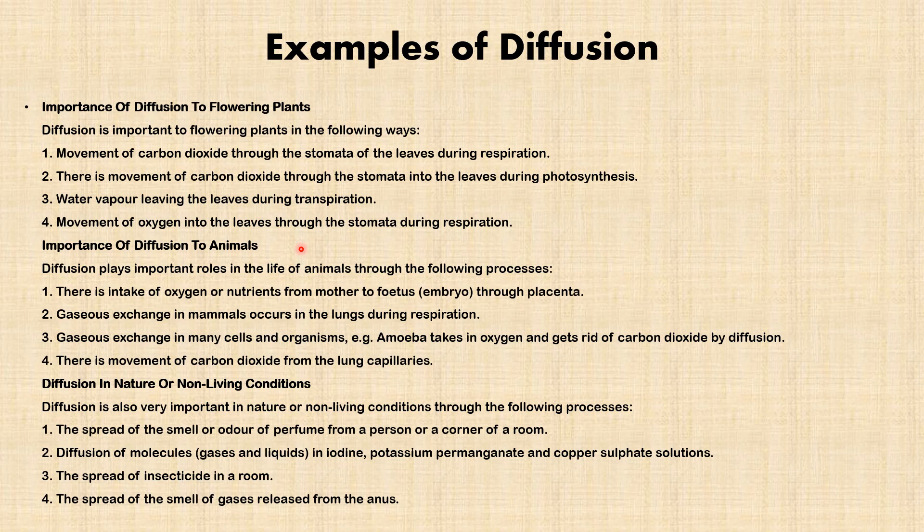Diffusion also plays an important role in the life of animals through the following processes: intake of oxygen and nutrients from mother to fetus through the placenta; gaseous exchange in mammals in the lungs during respiration, where gases are exchanged between the alveoli and the capillaries carrying blood to the lungs; gaseous exchange in single-celled organisms — for example, amoeba takes in oxygen and gets rid of carbon dioxide by simple diffusion; and movement of carbon dioxide from lung capillaries into the alveoli, which is then exhaled through the nose.